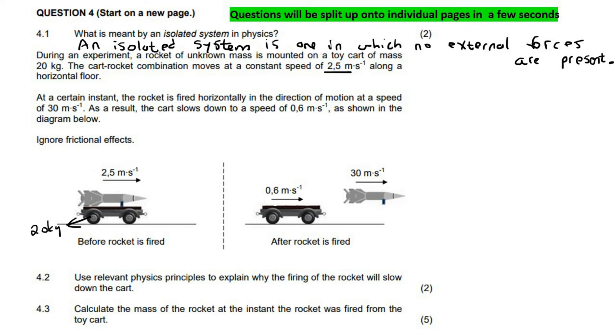At a certain time or instant, the rocket is fired in the direction of motion at a speed of 30 meters per second. As a result, the cart slows down, think about that guys, some students do struggle with this, but if you've got this cart and this rocket busy moving along at 2.5 meters per second, so the rocket is currently not moving, it's just moving on the cart, suddenly the rocket engine switches on and it starts accelerating in this direction. Think about what that would do, it would almost slow this car down a little bit, because there's some type of backwards force that would cause the car to slow down a little bit.